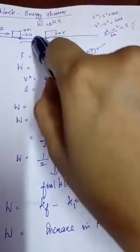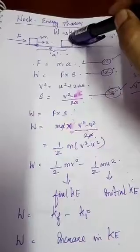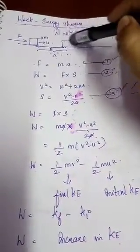Because of this force, the object is moving in this direction. Therefore, I can say this force times displacement is work done. This work done produces a change in its kinetic energy, so W equals delta KE. Delta KE means change in kinetic energy.